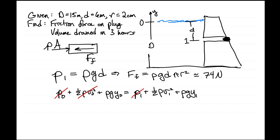So we plug everything in and we get that v1 equals square root of 2 gd, which is 10.8 meters per second.